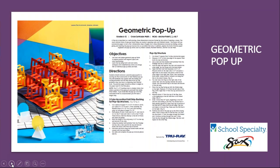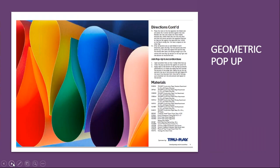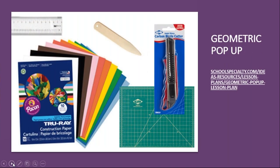This next fun lesson plan comes from artist Annette Johnson from Waukesha, Wisconsin. It is a geometric pop-up created using True Ray papers. This lesson uses construction paper to turn a flat two-dimensional sheet of paper into a three-dimensional structure by folding, cutting, gluing, and inserting the pop-up structure into an accordion-folded strip. Students will also explore the artwork of famous paper engineers and pop-up artists such as Robert Sabuda and Matthew Reinhardt. Key materials include True Ray construction paper, Alvin cutting mats, a bone folder, Westcott see-through acrylic rulers, and the Alvin carbon blade cutter.